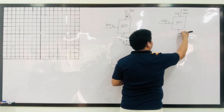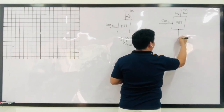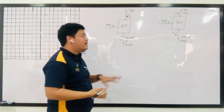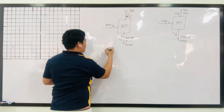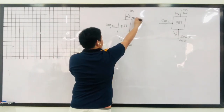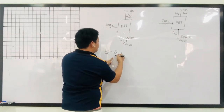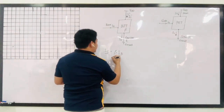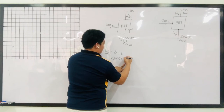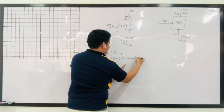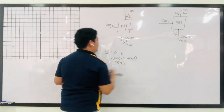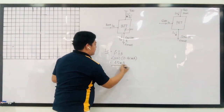So in our BJT, our collector current is defined by the equation IC is equal to beta times IB. IC is the current in your collector, IB is the current in your base, with amplification factor beta. For example, let's say your beta is equal to 100, and your IB is 0.45 milliamperes. So you will have the current that flows to your collector as 45 milliamperes. That is for our BJT.